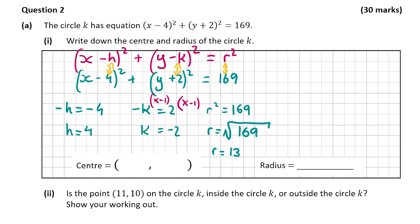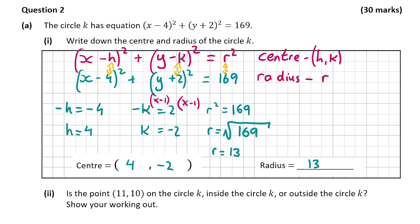√169 = 13. So remember, when an equation is in the form (x - h)² + (y - k)² = r², the centre is (h, k) and the radius is r. I have h = 4, k = -2 and r = 13, which means the centre is (4, -2) and the radius is 13.